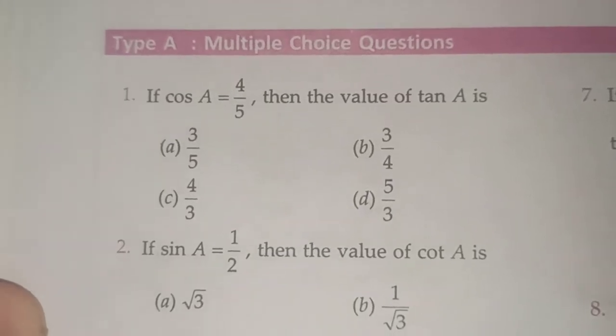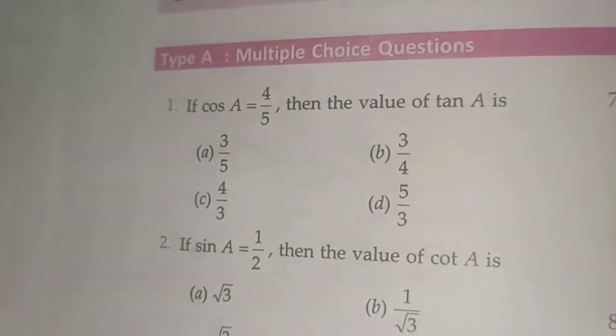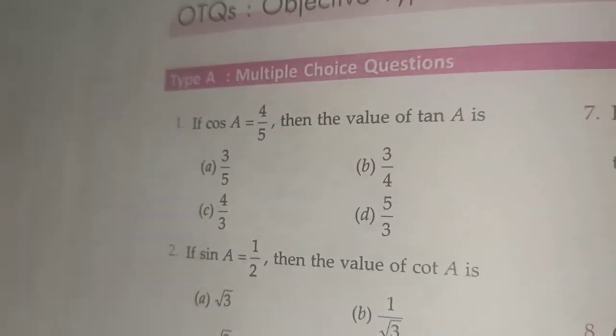In this question, it is given that cos A is 4 by 5, then find the value of tan A and we have given 4 options.